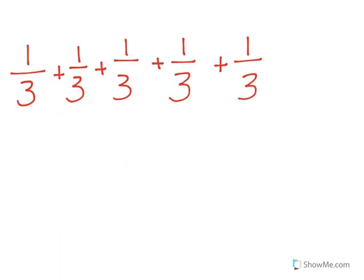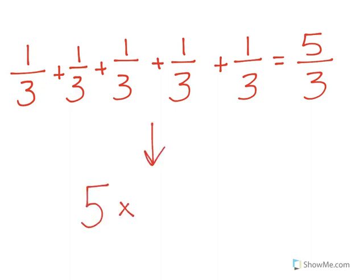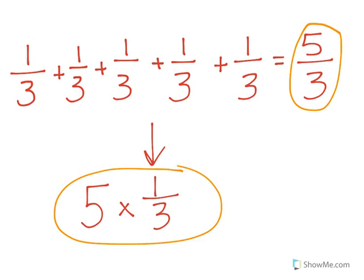We've learned when adding fractions that if we were to add up all of these 1 thirds, we would get 5 thirds. We see here that we're adding the same fraction over and over, and we have 5 one-thirds. So this problem is exactly equal to 5 times 1 third, because a repeated addition is the same as multiplication. So 5 thirds can also be written as 5 times 1 third.